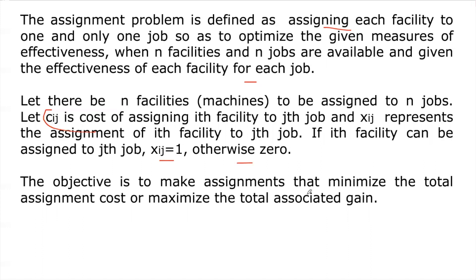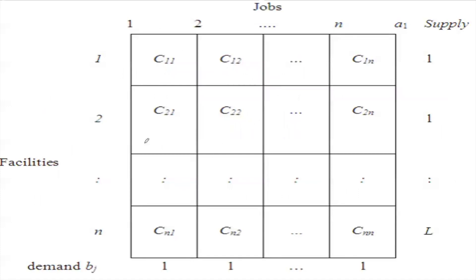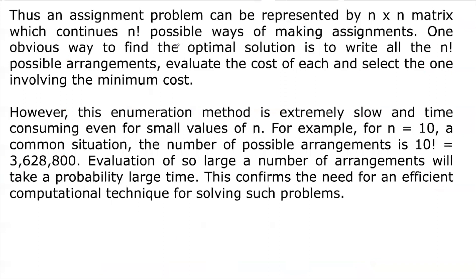The objective is to make assignments that minimize the total assignment cost or maximize the total associated gain. The matrix has rows representing facilities or workers and columns representing jobs or machines. Supply will be one and demand will also be one, because we need only one facility per job and vice versa. Only one assignment can be made in each row and in each column. Thus, the assignment problem is represented by an N×N matrix.